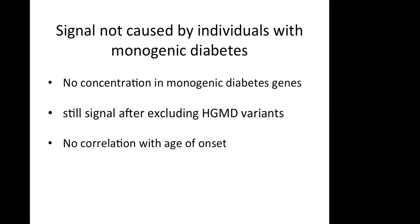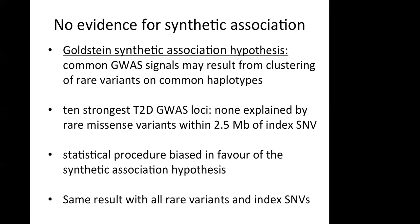Of course, the first concern that comes to mind is whether these signals might be caused by individuals accidentally included in the cohort who actually have monogenic diabetes. To address this, the authors found no concentration of rare variants in known monogenic diabetes genes, excluded all known disease variants listed in HGMD and the signal remained, and showed no correlation with age of onset — which you would expect given that monogenic diabetes has a much earlier onset than typical type 2 diabetes.